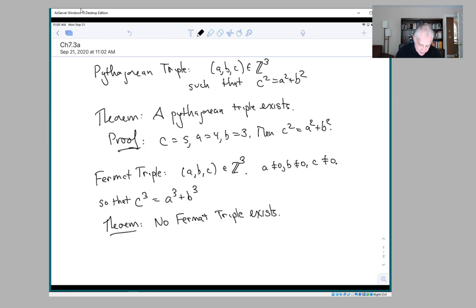So from a logical point of view, this is the negation of the statement: there exists x such that x is a Fermat triple. And the negation of that statement is: for all x, x is not a Fermat triple.